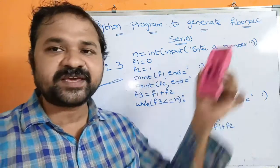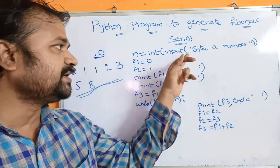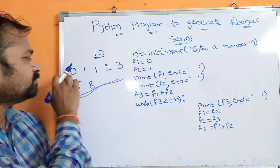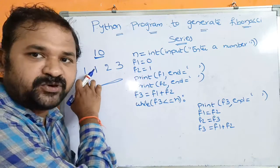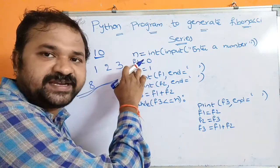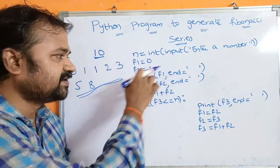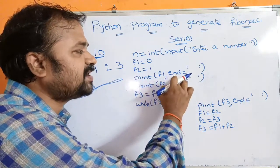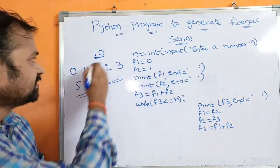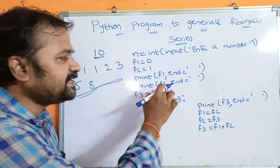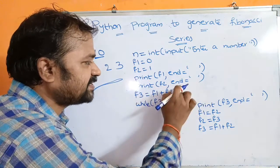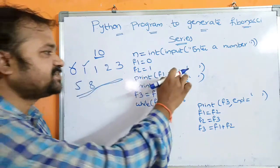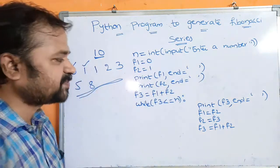First we have to read a number from the keyboard. So n is equal to int of input. Next, what is the starting value? First we have to display 0, then 1. So let us assume that f1 is equal to 0, f2 is equal to 1. Next we display those 2 values. Print f1 with end equal to a space, so 0 will get printed. Next print f2 with end equal to a space, so 1 will get printed, followed by a space.